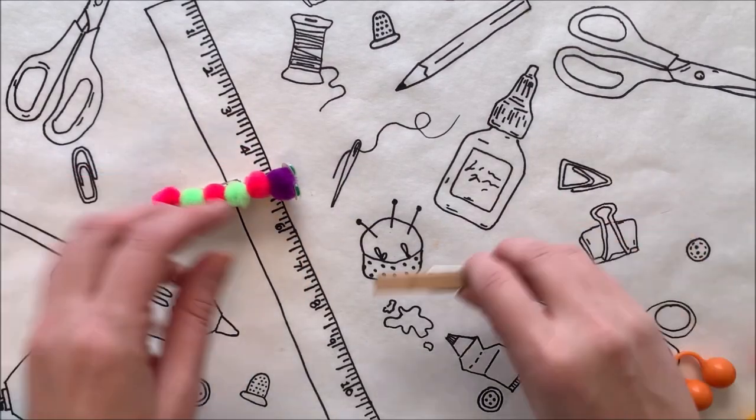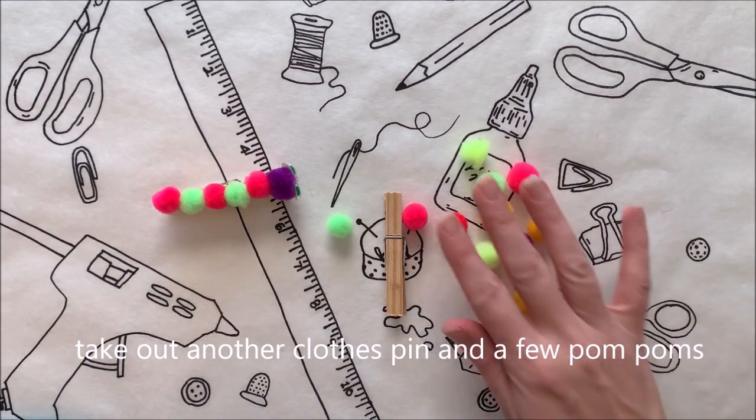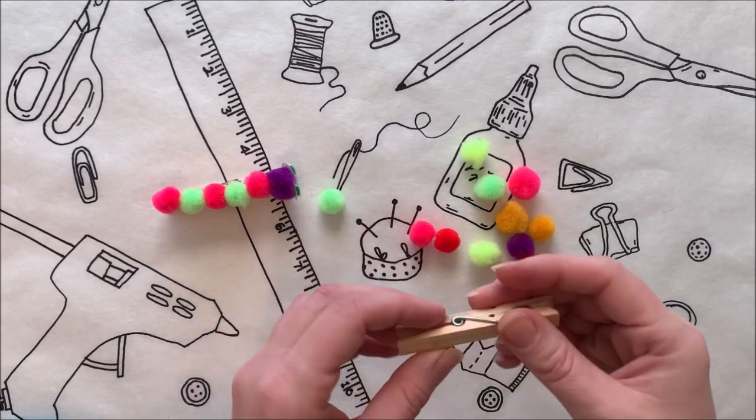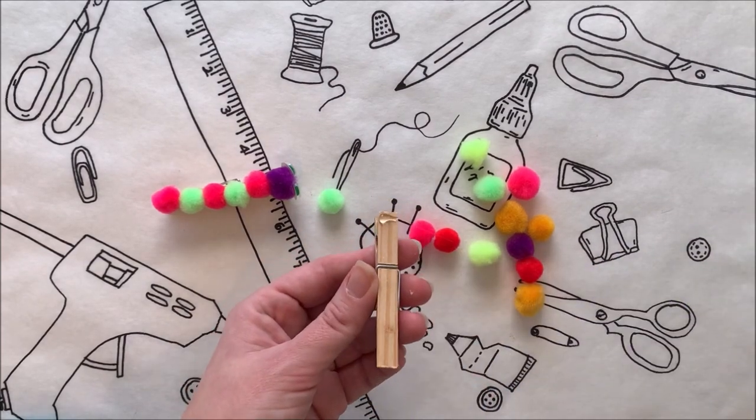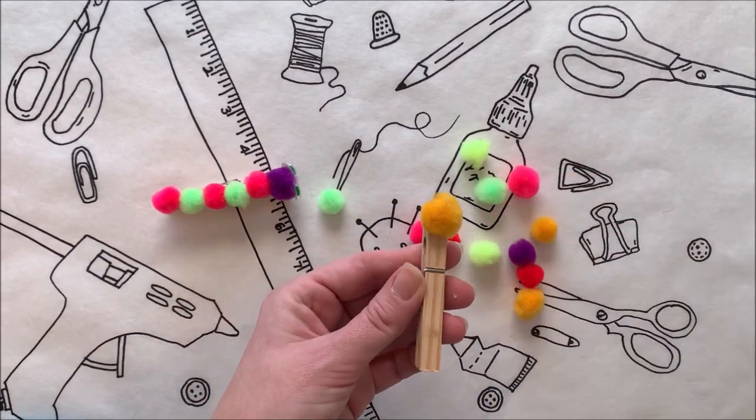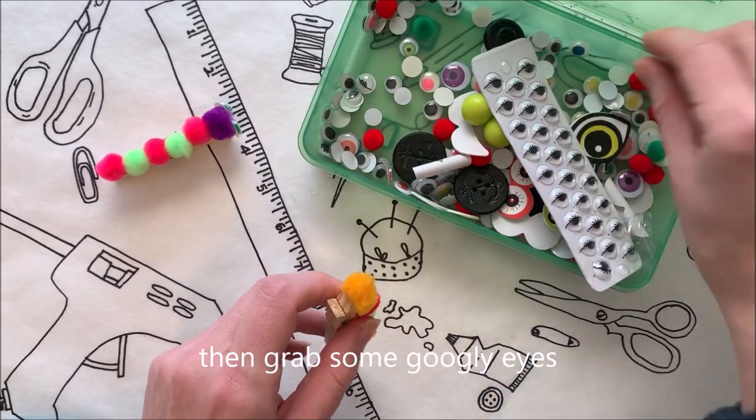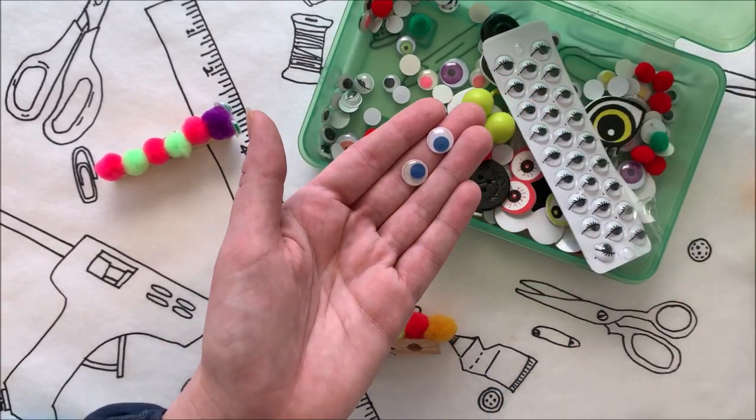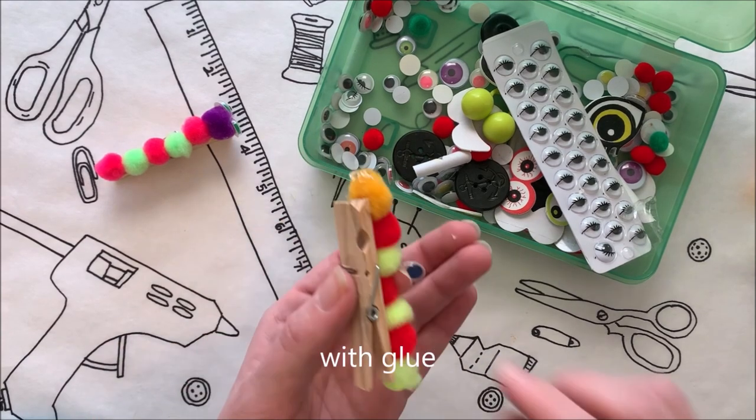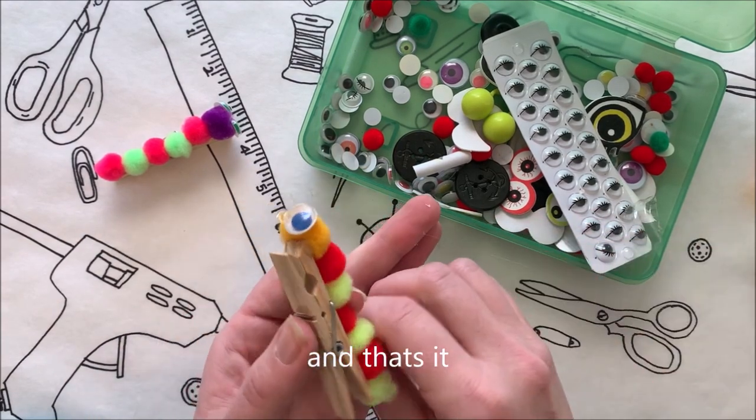Let's make some fuzzy caterpillars. Take out another clothes pin and a few pom-poms. Add glue to the top of the pin and start attaching pom-poms in a line. Then grab some googly eyes and attach the front of the caterpillar with glue. And that's it.